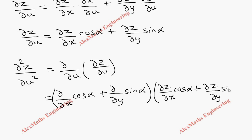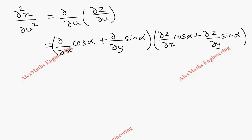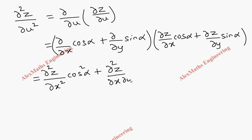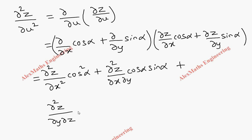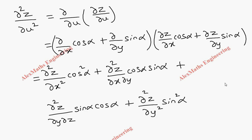We expand by multiplying: first term with first term gives ∂²z/∂x² · cos²alpha; first term with second term gives ∂²z/∂x∂y · cos alpha · sin alpha; then second term with first term gives ∂²z/∂x∂y · sin alpha · cos alpha; and the last term gives ∂²z/∂y² · sin²alpha. Let's keep this as the first expression.